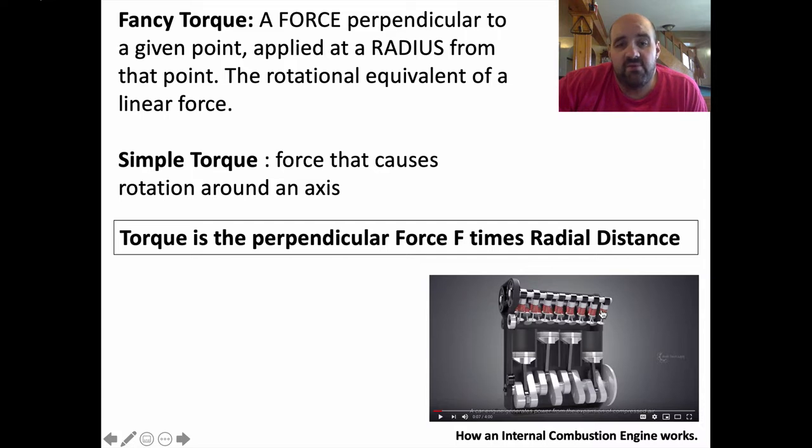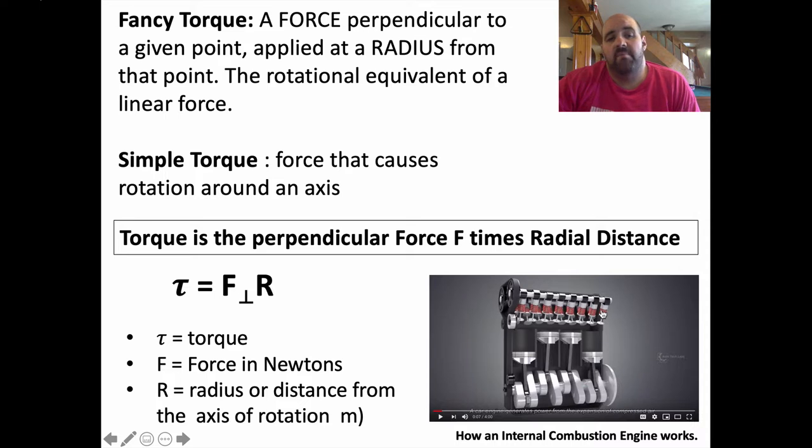So torque is the perpendicular force times radial distance, that's the formula for it in words. Torque, tau, the Greek letter tau, equals force times distance, or radial distance. So keep that in mind, a simple way to think of torque is just force times distance, it's rotational force. Of course force is measured in newtons, and the radial distance or radius from the axis of rotation is measured in meters, so torque is going to have a unit of a newton times a meter, or a newton meter. So that's simply torque, a force that causes rotation.